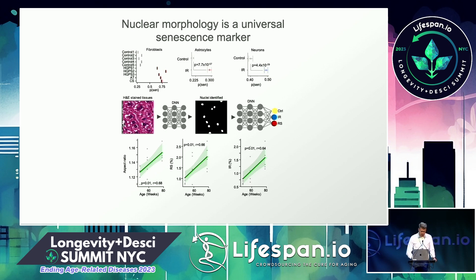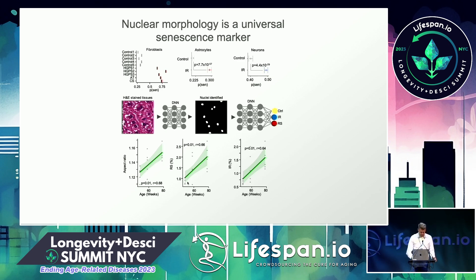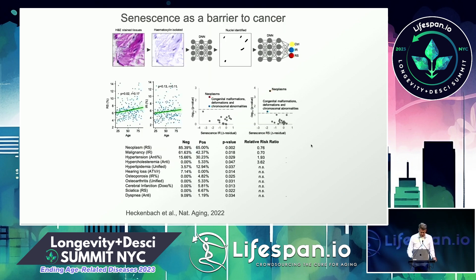From tissues it's difficult to identify cells, but it's very easy to identify nuclei. In liver tissues from mice, we have a neural network that picks up the nuclei, and then we run our senescence predictor on them. We see that aspect ratio increases with age — nuclei become more elongated with age. We also see an increase in both predicted replicative senescence and ionizing radiation-induced senescence.